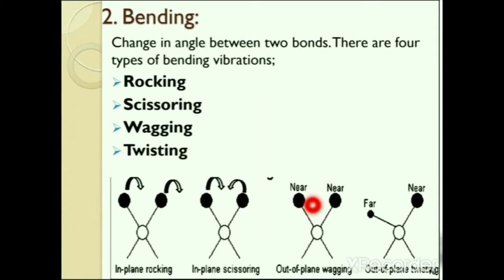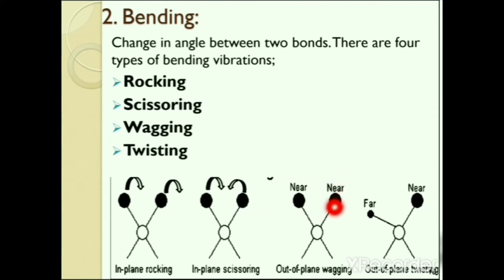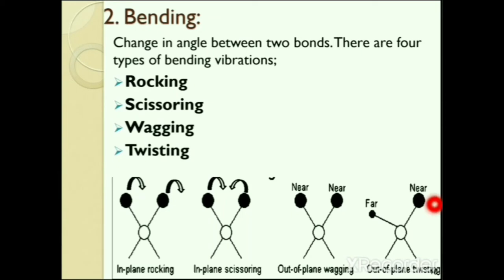In scissoring vibration, the bond angle decreases. In wagging vibration, both atoms move to one side of the plane — for example, both atoms coming towards us. In twisting vibration, one atom is above the plane and the other is below — one atom coming near to us while the second atom is far away.